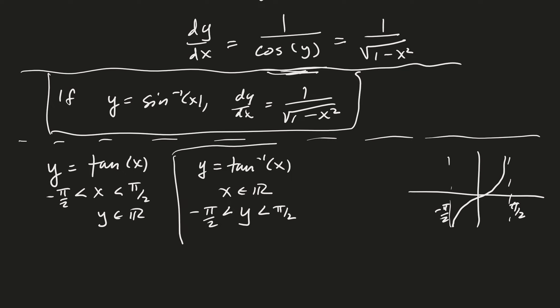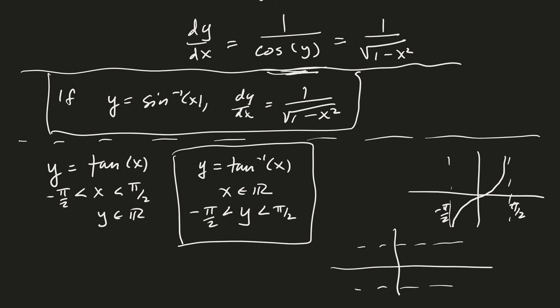The inverse tangent function is quite nice: where the original tangent has vertical asymptotes at ±π/2, the inverse function has horizontal asymptotes at ±π/2. The resulting shape is an elongated S-curve, which is why some people call it a sigmoidal function.